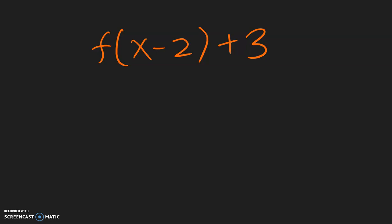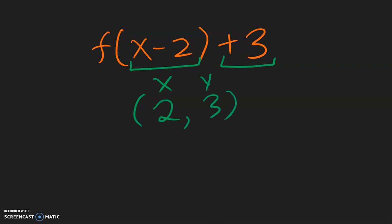Same thing here. Inside, we have x minus 2. So this negative 2, let's change it to positive 2. So the x direction is positive 2. And the y — this 3 over here — because this is outside, no change. So that positive 3 stays positive 3. With this point, we can describe which way this function moved: positive x went to the right, positive y went up. Simple.